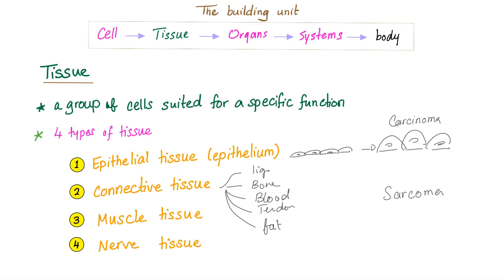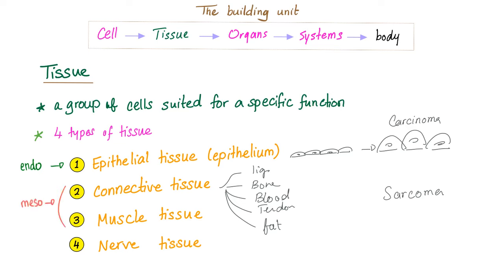Remember the building unit of the human body is the cell. A group of cells is a tissue; a group of tissues is an organ; a group of organs forms a system. How many types of tissue? Four: epithelium, connective, muscle tissue, and nerve tissue. Epithelium arises mostly from endoderm, but the epidermis of the skin is ectoderm. Connective tissue is mesoderm. Muscle tissue is mesoderm. Nerve tissue is ectoderm.